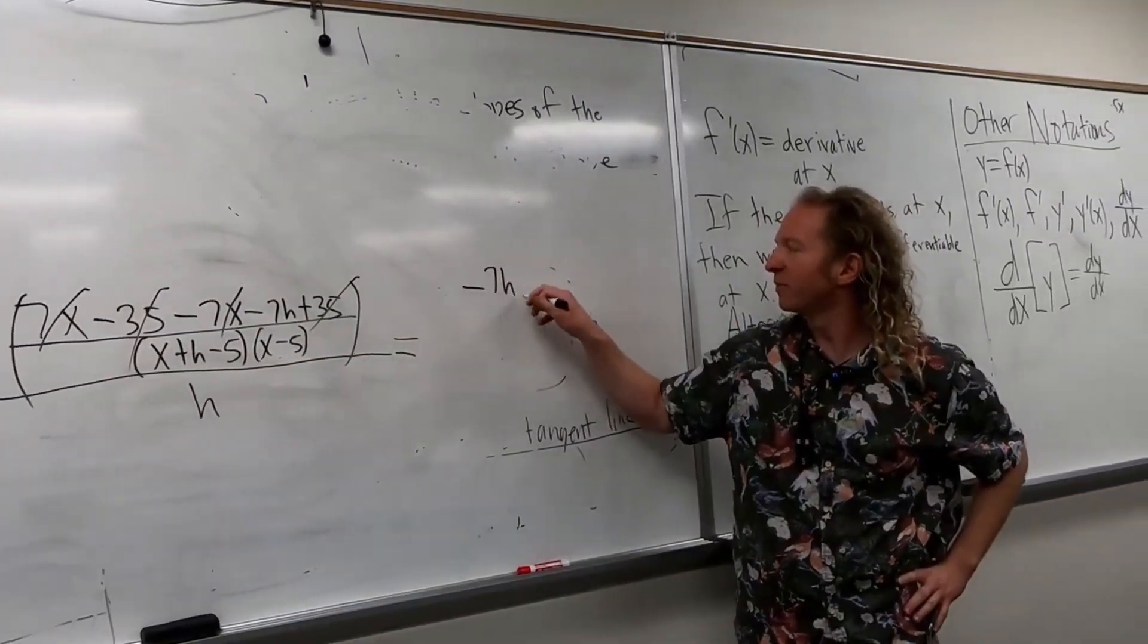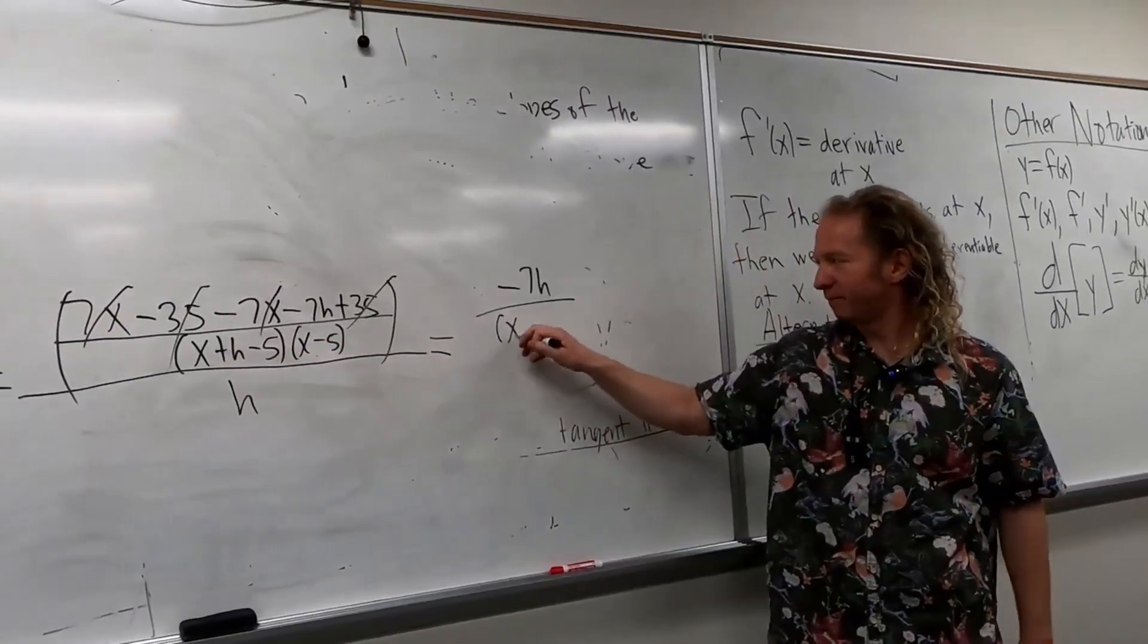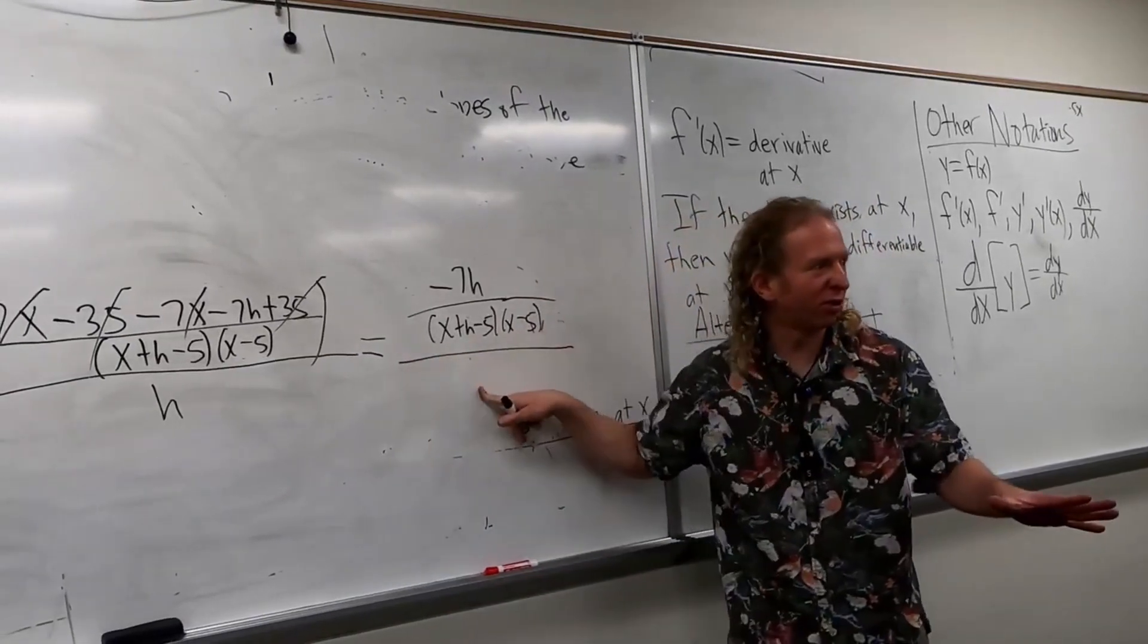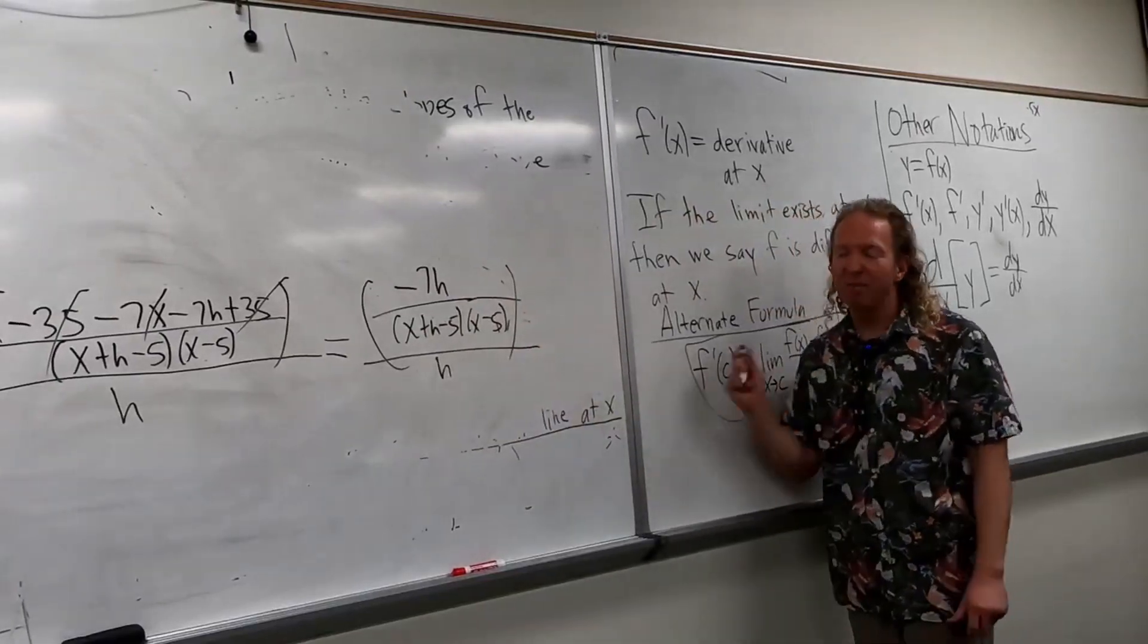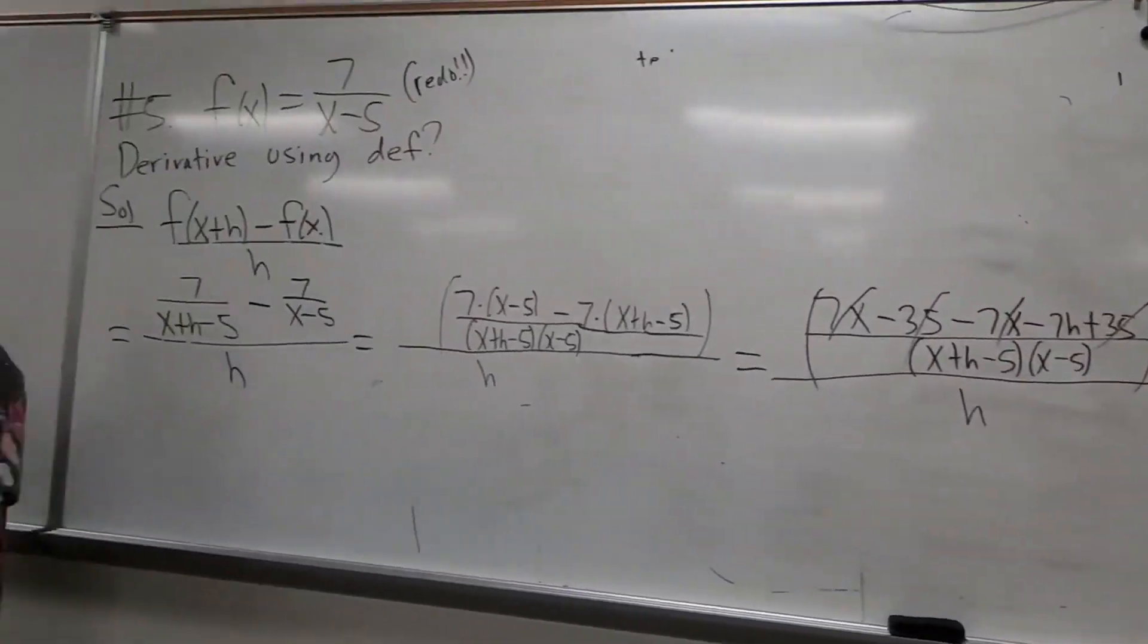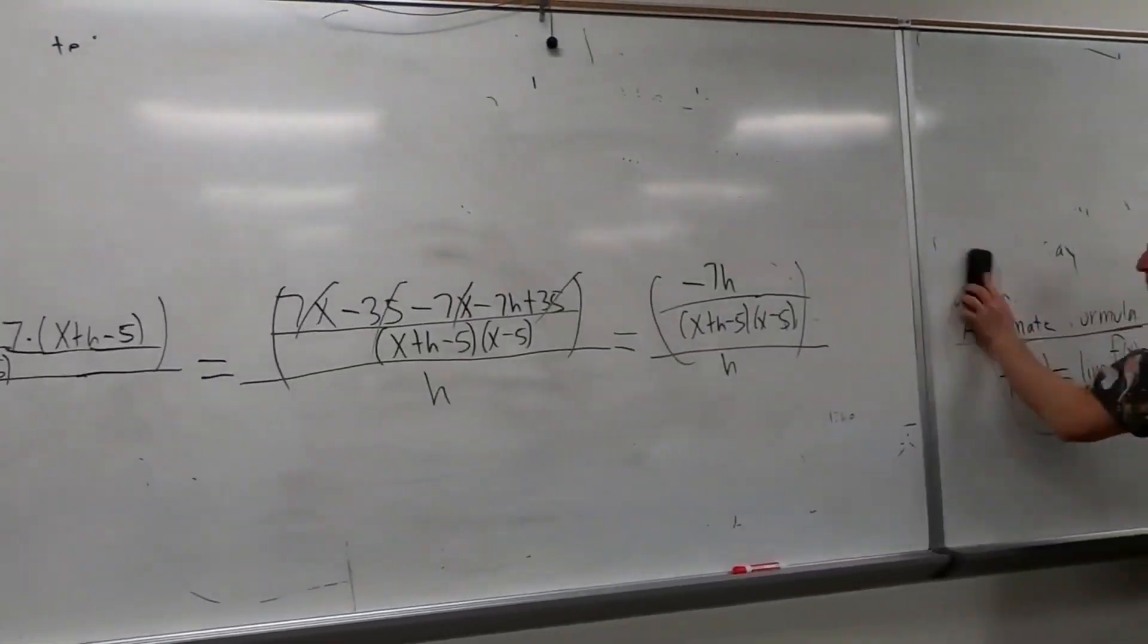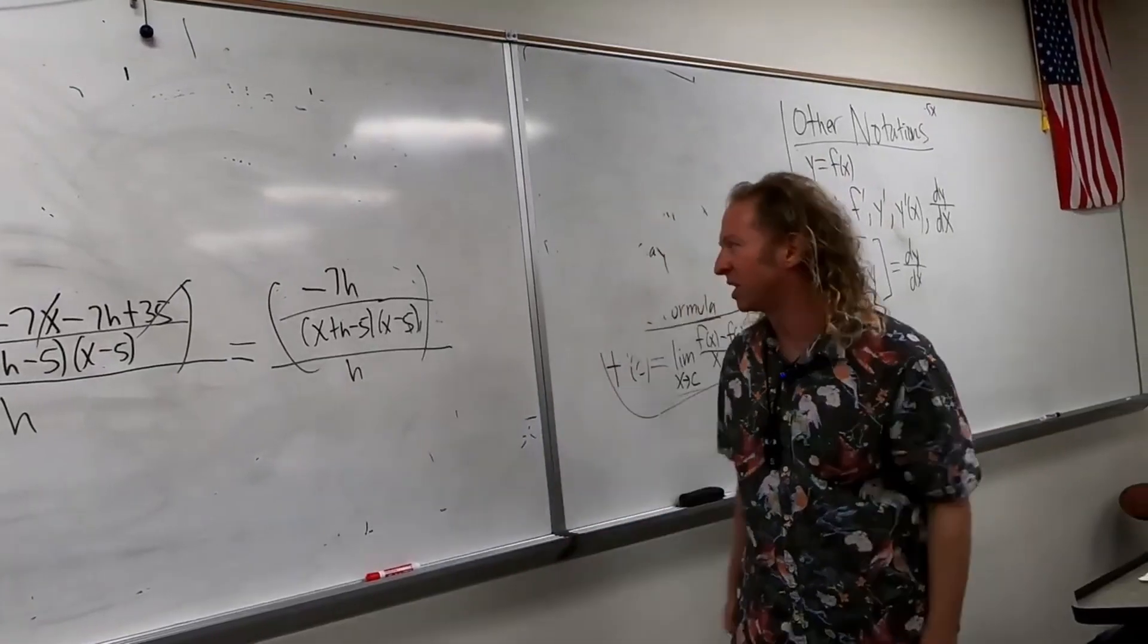So, we have negative seven h over... Then we have this, x, the bottom piece. It's all over h, all over h, and it's still parentheses. Still parentheses. I picked this one because I think this is a good one for the exam. Usually, there's one... I don't know what's on there. I forgot, even though I just made the test. But I feel like this is one that I would put on there, with a fraction. It's a good one. It's good. Builds character.